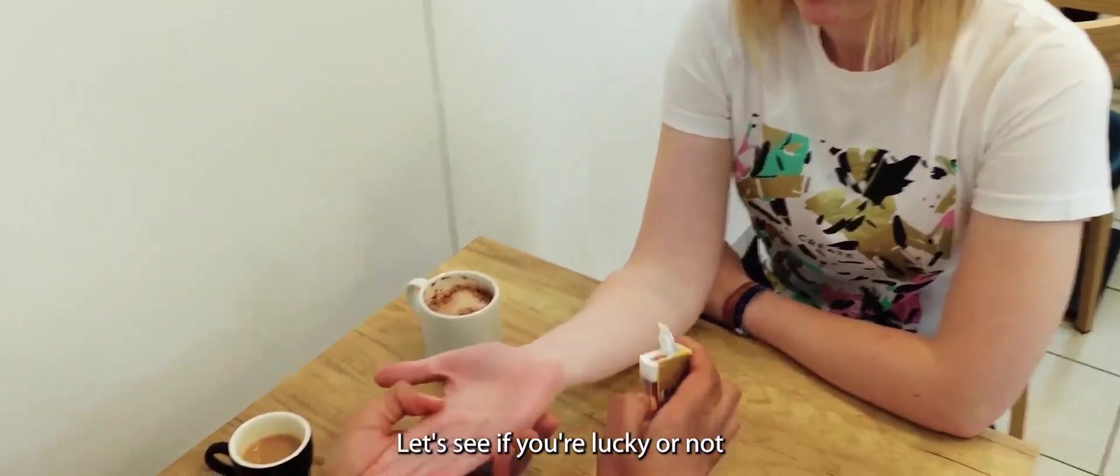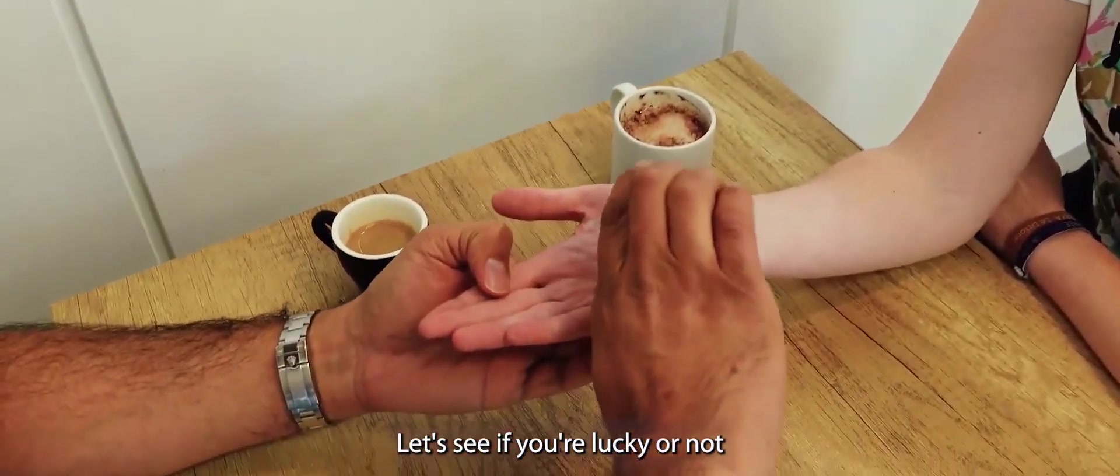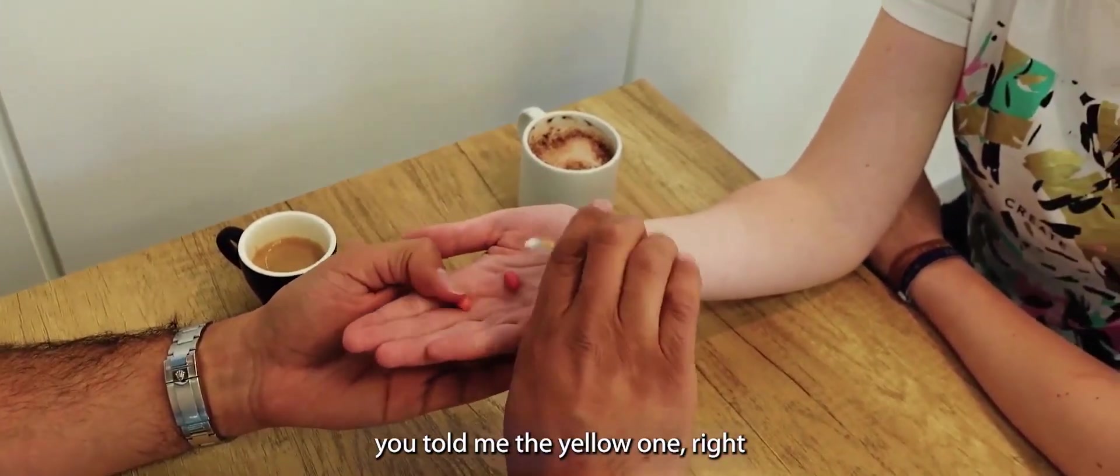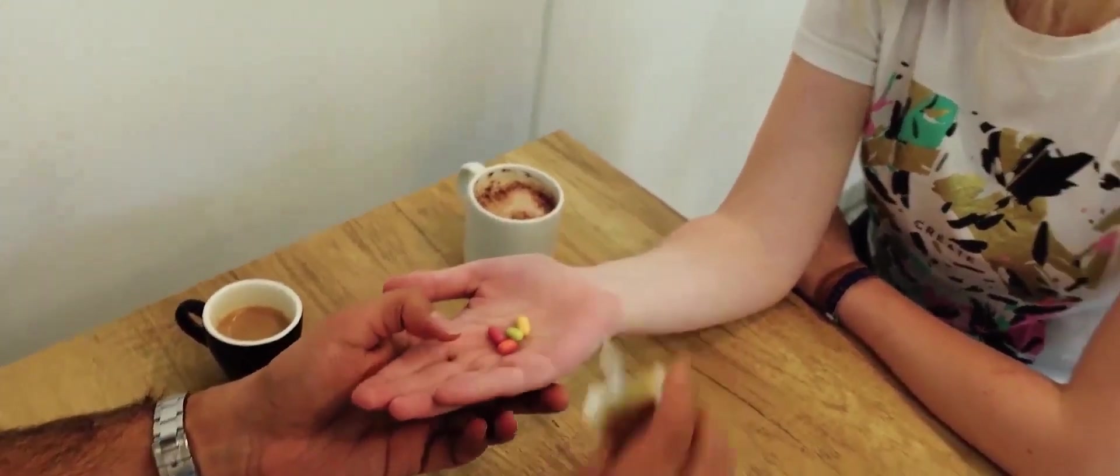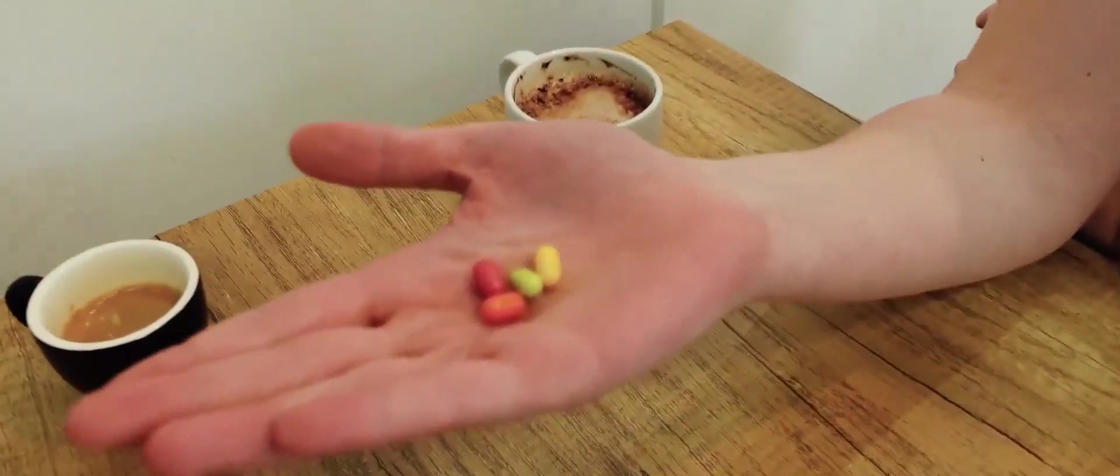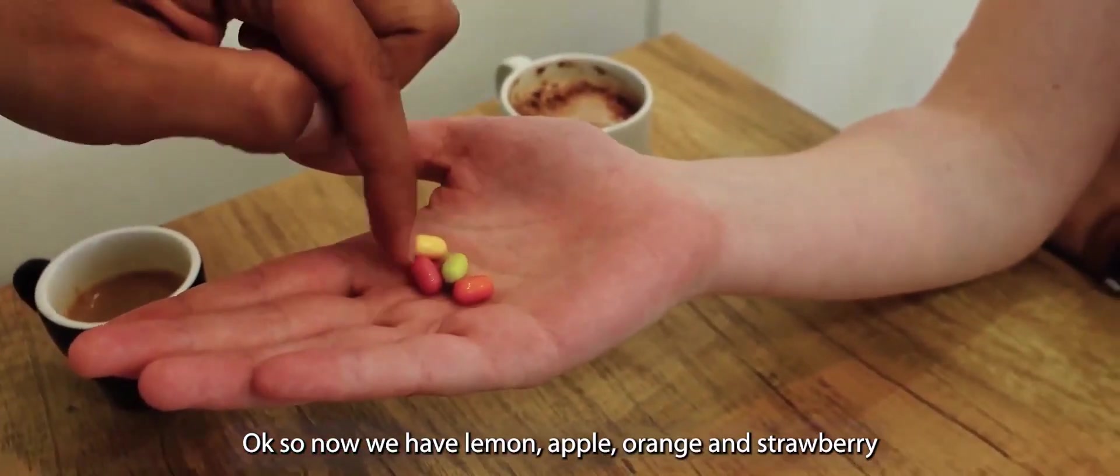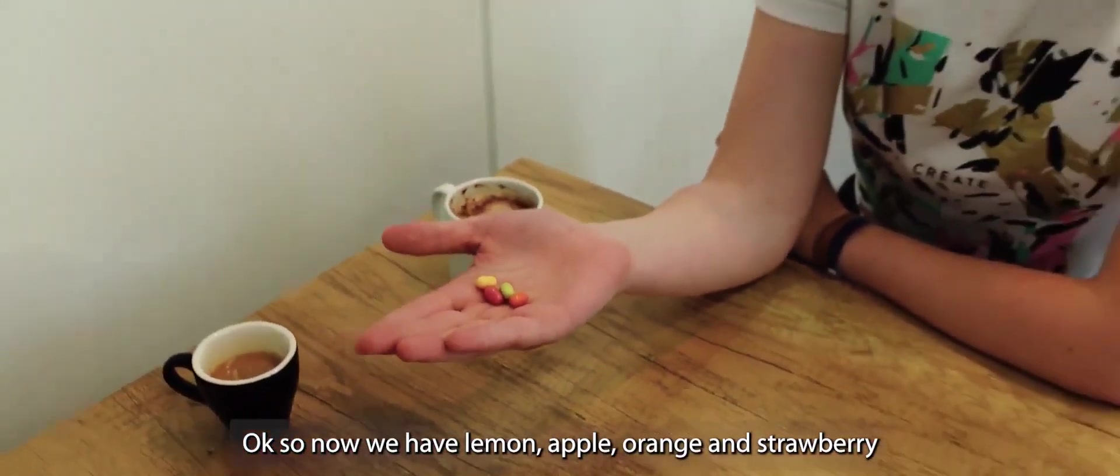Could you please put your hand just like this? And we are going to see if you have luck. You told me the yellow one. Oh, not yet. Not yet. Oh really? That's good. Okay, so now we have yellow like lemon, apple, orange, and strawberry.